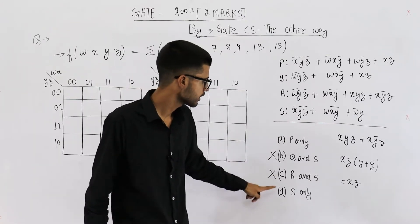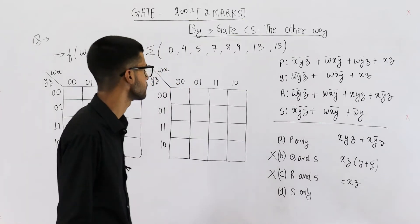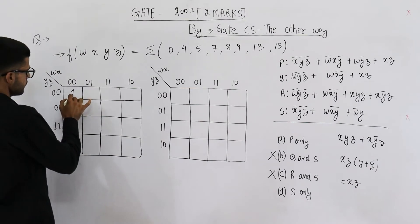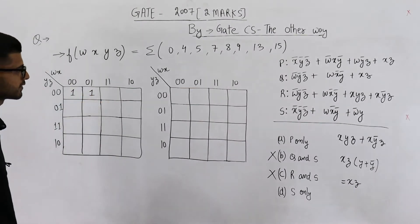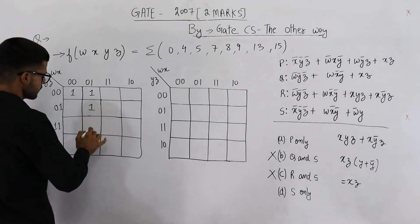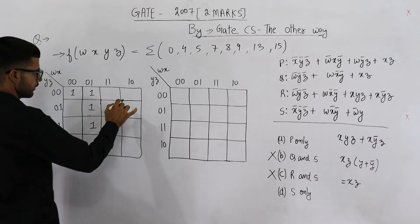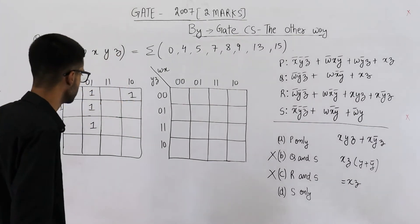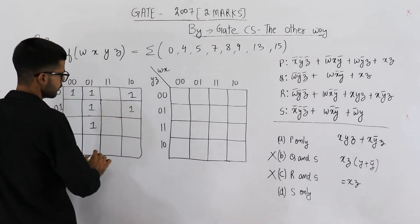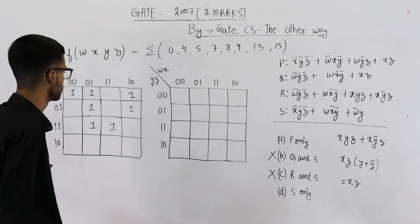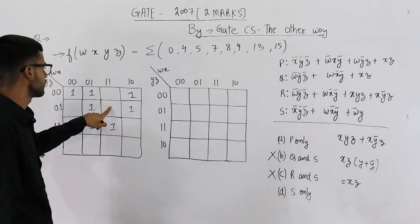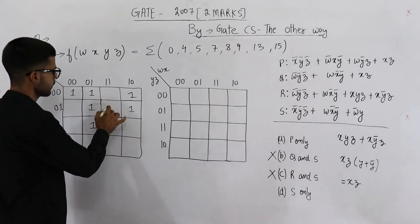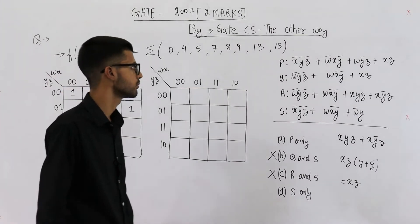Now the confusion is between option A (P) and option D (S). Let's first fill the K-map for f from the given minterms: 0, 4, 5, 6, 7, 8, 9, 13, and 15. Placing these on the K-map: minterms 8, 9, 15, and 13 are also included. So this is the K-map that we get.